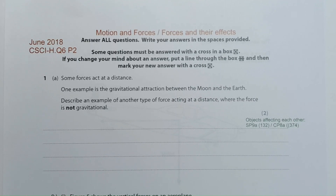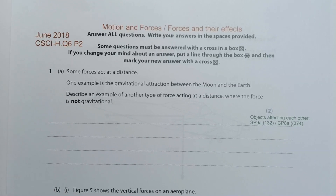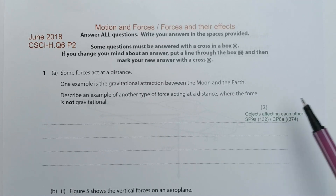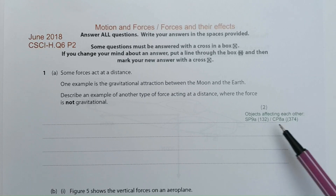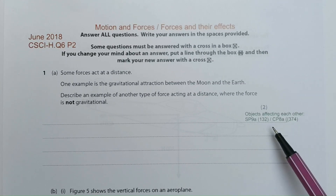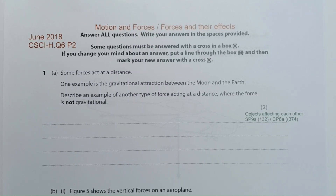Before I start going through the question, I want to point out three things that you see on this video which are additional. On the top of each question, I will be listing the main topic that this question is based on. On the right-hand corner, I will be listing the exam year and the paper. This is the combined science higher tier question 6, paper 2. Below the marks available, I will also be listing the topic title with references to the textbook page numbers. SP stands for the separate science 9a, page number 132, and CP stands for the combined physics topic 8a, page 374. I will show you the books I am referring to at the end of this video.